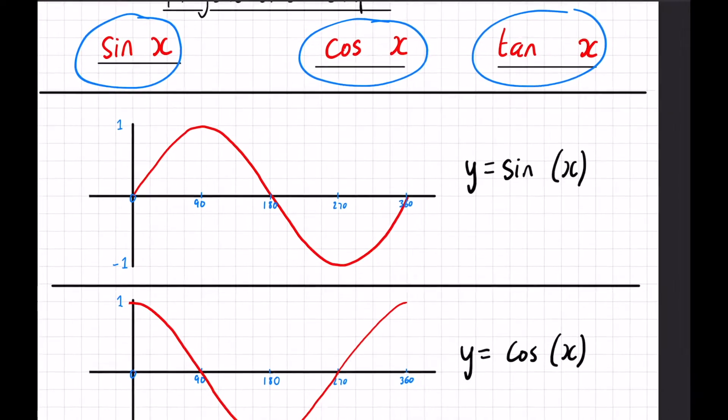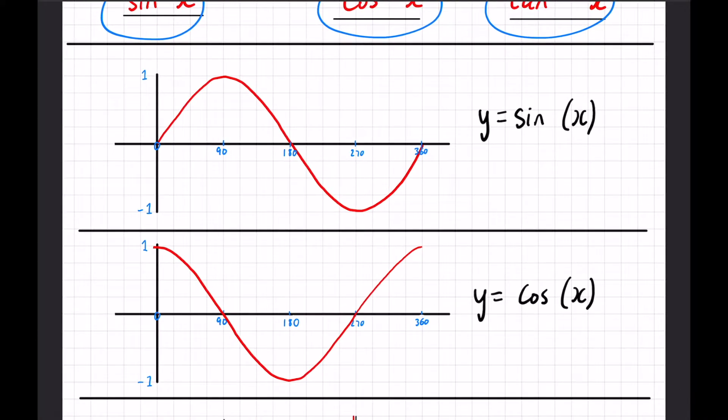We're going to look at sin and cos first. These both are very similar to each other. If you notice the only difference between them is technically the sin x is 90 degrees ahead of the cos x. So if you were to shift the cos x graph 90 degrees to the right it would look exactly the same.